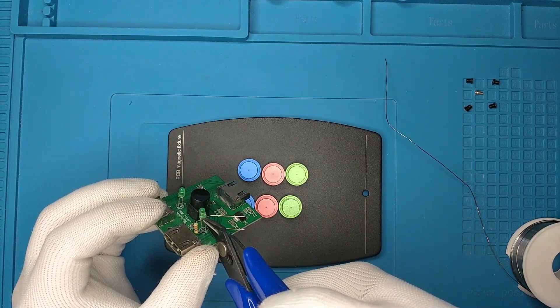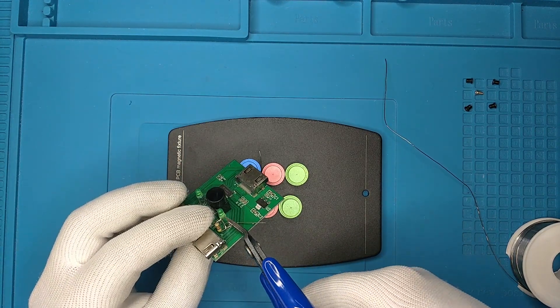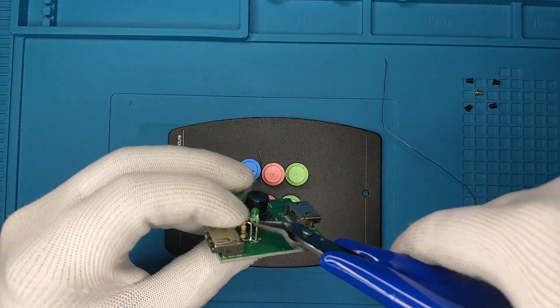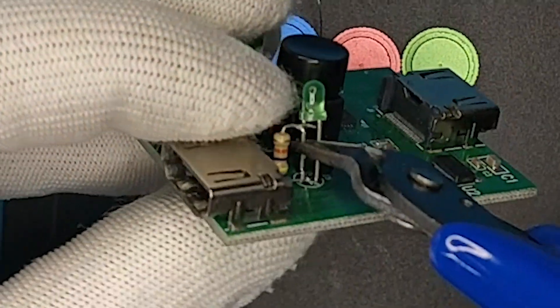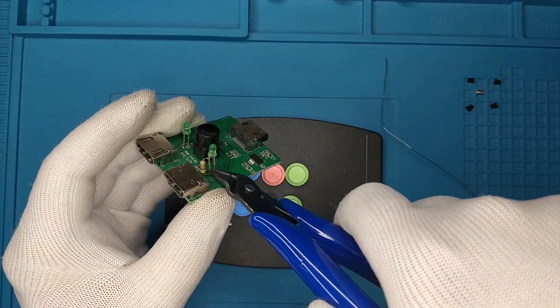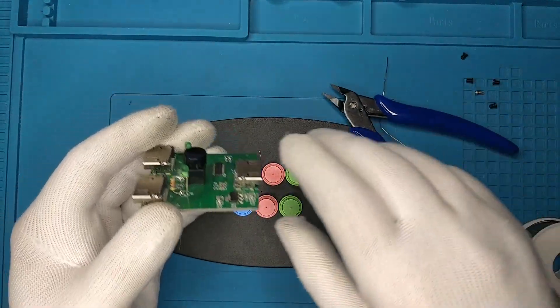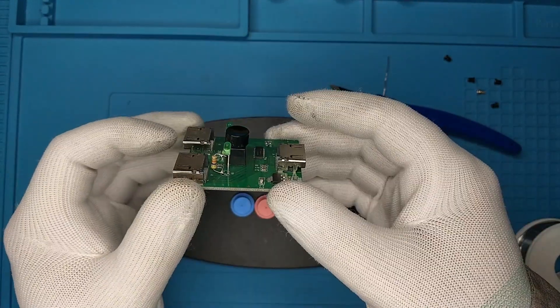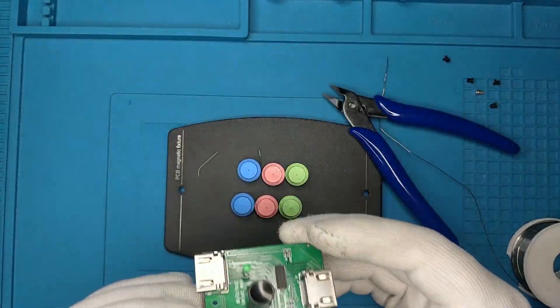Now we just cut the sides so they won't be touching. And now we can cut the leg of the lead. Like that. And now we have one with a resistor and one without. So let's see if this works.